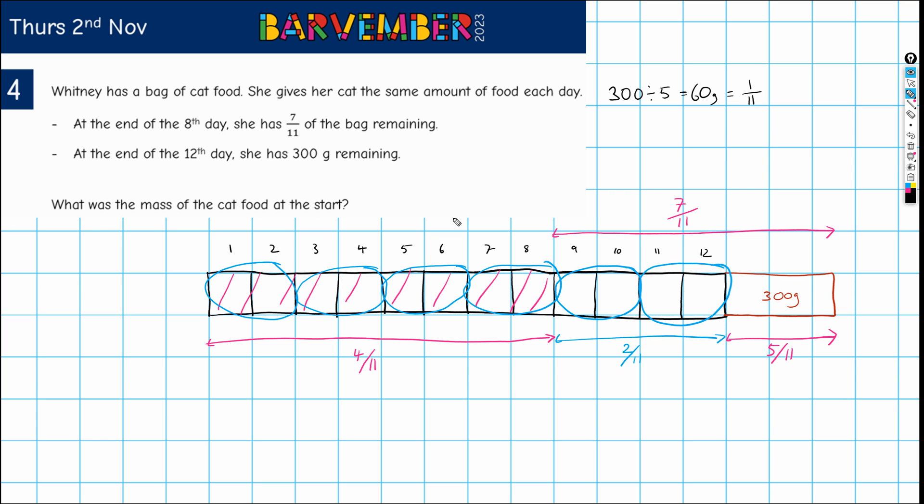And let's go back and figure out what our question is. What was the mass of the cat food at the start? Well, we've got everything divided into these parts. We've got it all in elevenths now. So if one eleventh is 60 grams, I need to do 60 times 11, which gives me 660 grams. Okay. 660 grams. All right. So apologies if this doesn't look the same as the White Rose Maths solution. But once you put the problem out there, everyone's going to approach it in their individual way. Hope that helps.